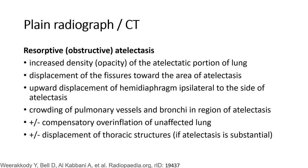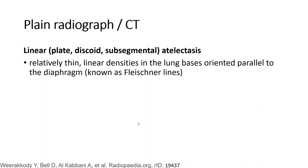In resorptive atelectasis, we can see increased density of the atelectatic portion of the lung, displacement of the fissure toward the area of atelectasis, upward displacement of the hemidiaphragm ipsilateral to the side of atelectasis, crowding of pulmonary vessels and bronchi in the region of atelectasis, plus or minus compensatory overinflation of the unaffected lung, plus or minus displacement of thoracic structures. Linear atelectasis appears as a relatively thin linear density in the lung base oriented parallel to the area of the diaphragm.